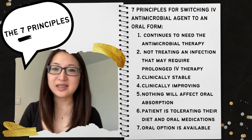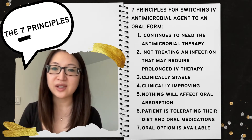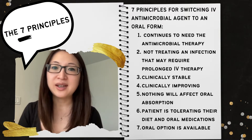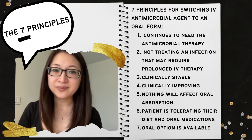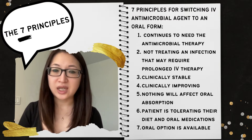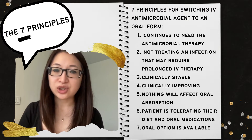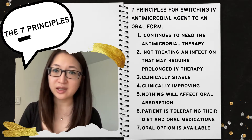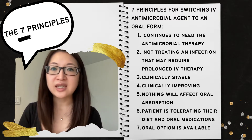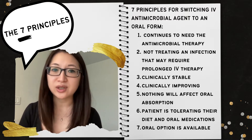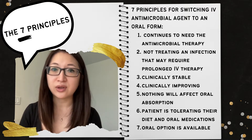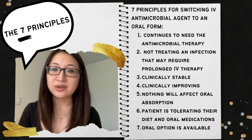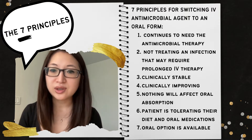These are the seven principles to consider when reviewing whether your patient can be switched from IV antimicrobial to an oral form. Number one: the patient continues to need antimicrobial therapy. Number two: the patient does not have an infection that may require prolonged IV therapy. Number three: the patient is clinically stable at the time of the switch. Number four: the patient is showing clinical improvement since the start of IV antibiotics. Number five: there are no factors that will affect how well the patient absorbs oral medications, including drug interactions. Number six: the patient is eating and taking oral medications without problems. Number seven: there is an oral option available based on the culture and indication being treated.